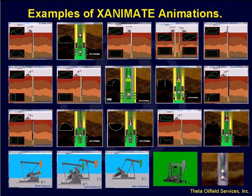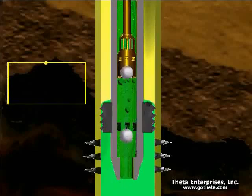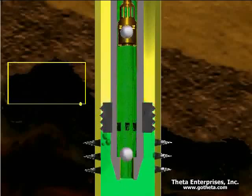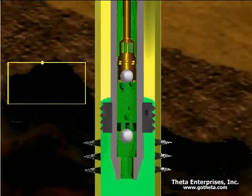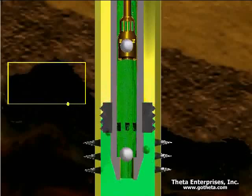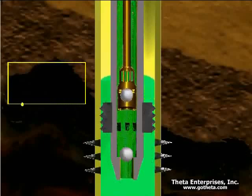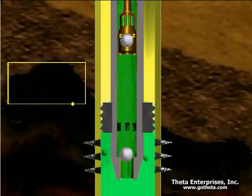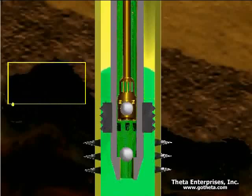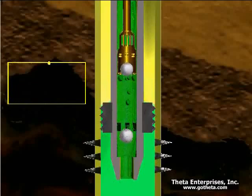These animations cover both the pump and how it works, and also the whole system. This shows how the pump works. On the upstroke, as soon as the plunger starts to move up, the traveling valve closes. It picks up the load, carries it for the rest of the upstroke, and then on the downstroke it releases the load. This is a full pump with no mechanical problems, so it clearly shows you how the pump works.